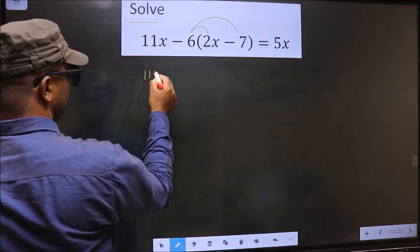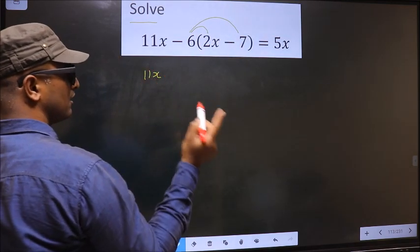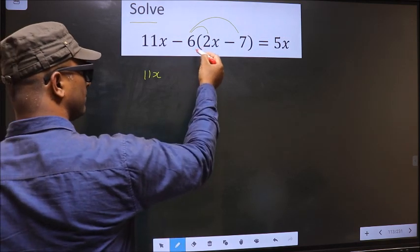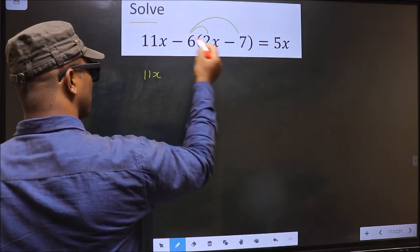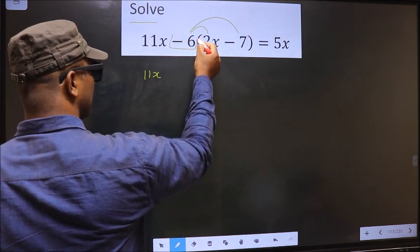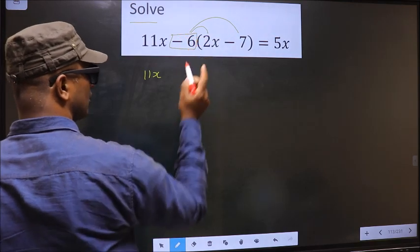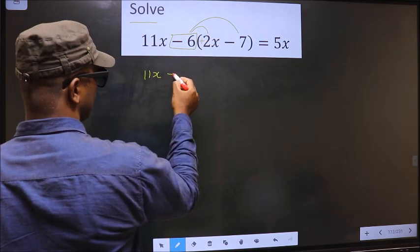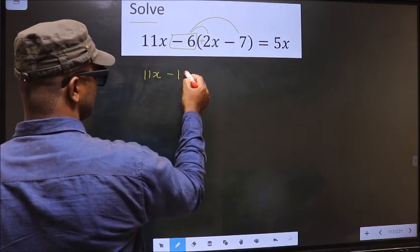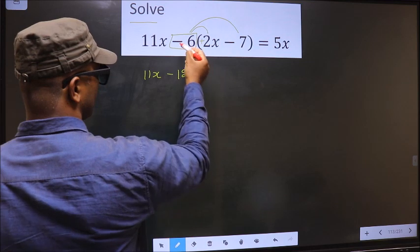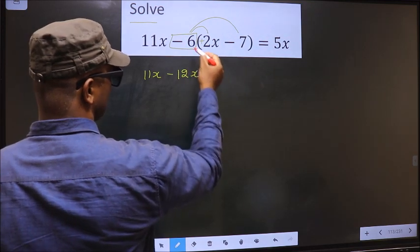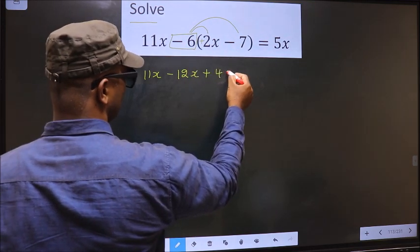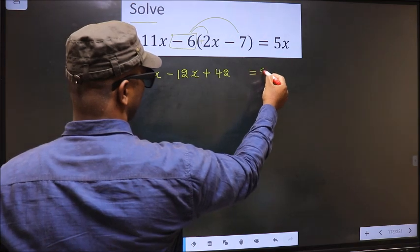That is 11x. What many do the mistake is they only multiply with 6, whereas you should multiply with minus 6. You should not do that mistake. Now, minus into plus is minus. 6 into 2x is 12x. Minus into minus is plus. 6 into 7 is 42. Equal to 5x.